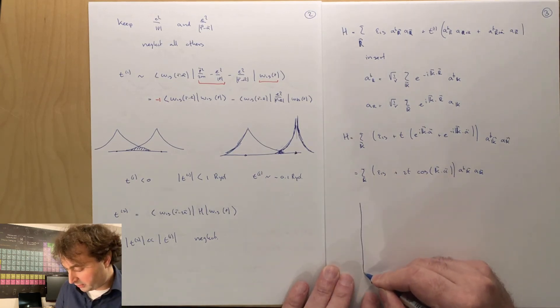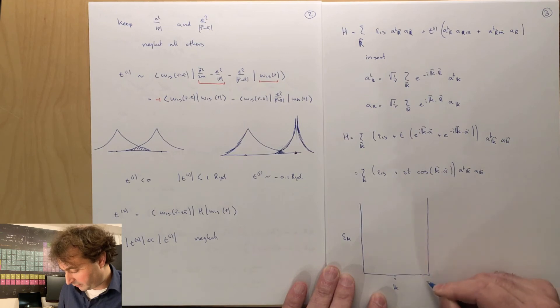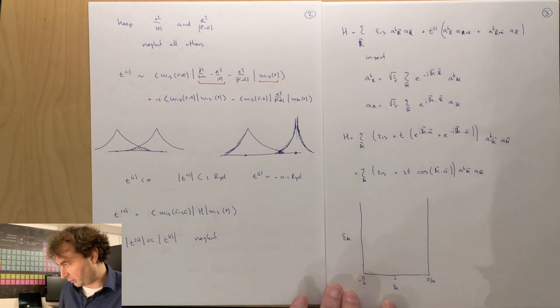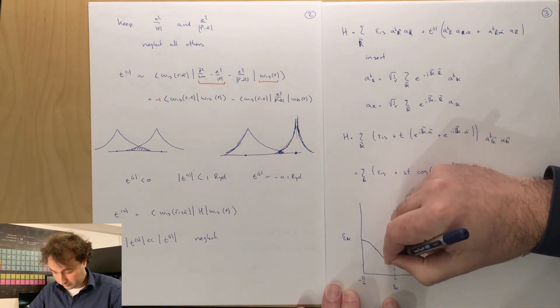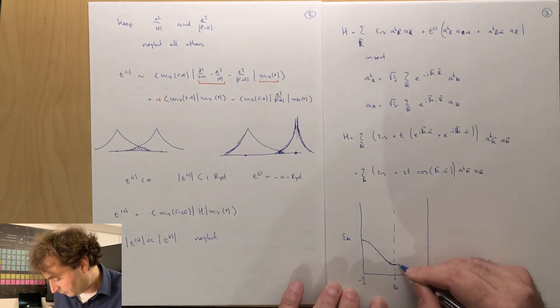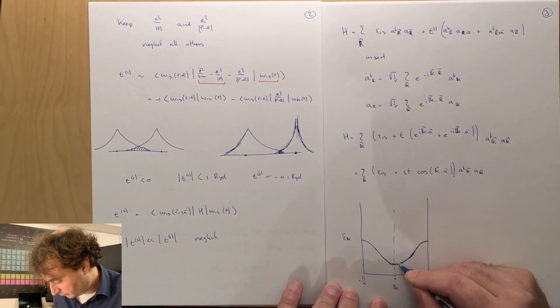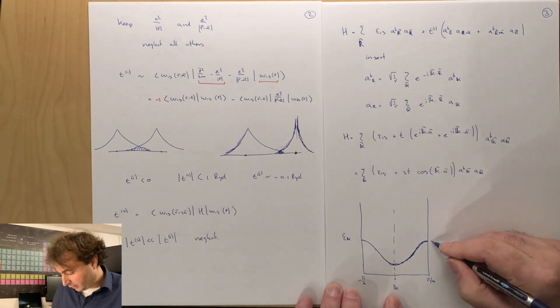So we can now plot our band structure, where we have the band energy as a function of crystal momentum in the Brillouin zone, going from minus pi over a to pi over a, and the dispersion is cosine-like. And the band width is 4T.